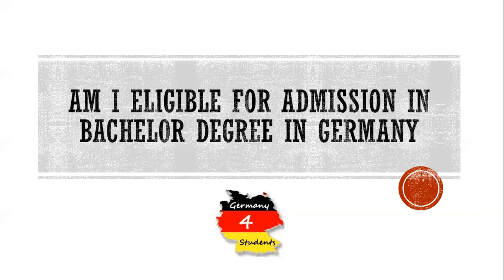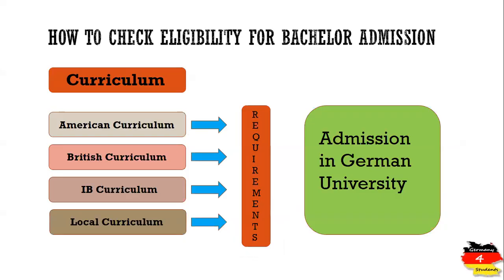In this particular video we are going to cover only the requirements for bachelor degree and how the eligibility check is done by the German universities. So starting from the left hand side, I have listed some of the very famous curriculums. For each curriculum there are different requirements that must be fulfilled so that admission to Germany in bachelor degree is possible on the right hand side.